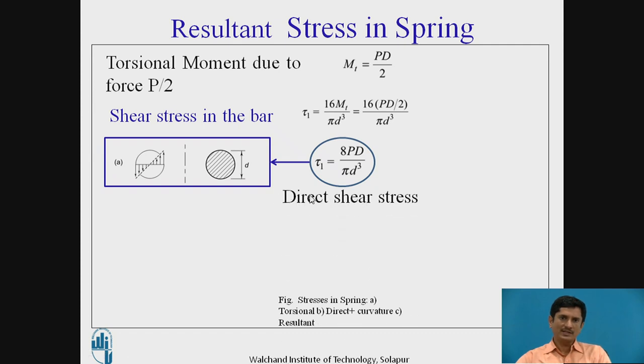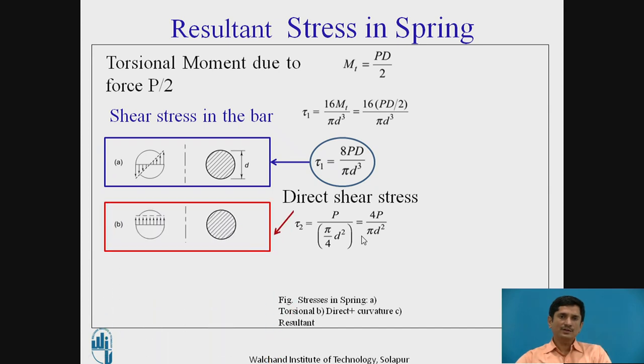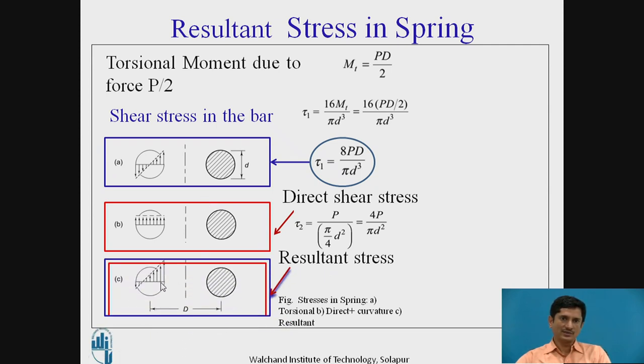Then second part is the direct shear stress. In direct shear stress tau 2 is given as P upon pi by 4 d square. The distribution for the shear stress is shown as it is same throughout as compared with the distribution maximum at the inner end and minimum at the outer end, zero at the center. If I superimpose these two stresses, I can get the resultant stress wherein at the inner position the stress is highest and at the outer range the stress is minimum.